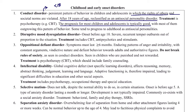Disruptive mood dysregulation disorder involves recurrent severe temper outbursts out of proportion to the situation — for example, screaming over a piece of chocolate. Onset is before age ten. Treatment is cognitive behavioral therapy, antipsychotics, and stimulants.